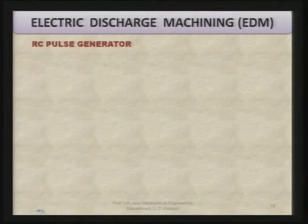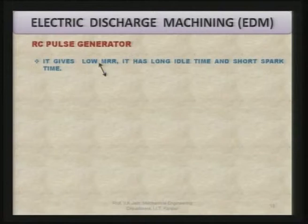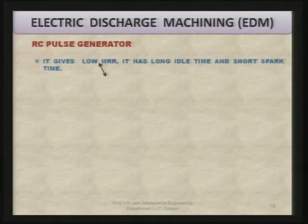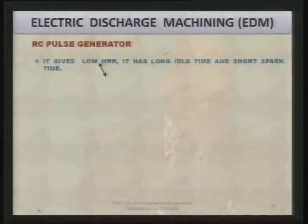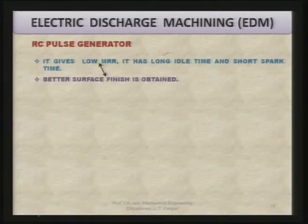The RC pulse generator gives a low material removal rate, with long idle time and short spark time. However, better surface finish is obtained with an RC pulse generator compared to a modern pulse generator, though the material removal rate is low.